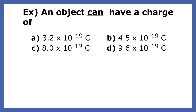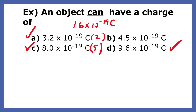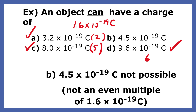Here are four charges. Which charges below could exist in nature? Every charge that is a whole number multiple of 1.6 times 10 to the negative 19th coulombs could exist in nature. Choice A is twice the elementary charge, so that charge is possible. Choice C is five times the elementary charge, so that charge is possible. Choice D is also possible because it is 6 times 1.6 times 10 to the negative 19th coulombs. The only charge that is not possible is B, 4.5 times 10 to the negative 19th coulombs, because it is not a whole number multiple of 1.6 times 10 to the negative 19th coulombs.